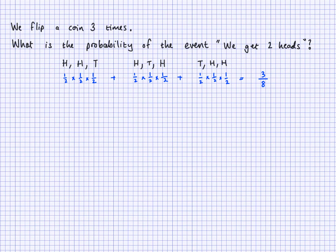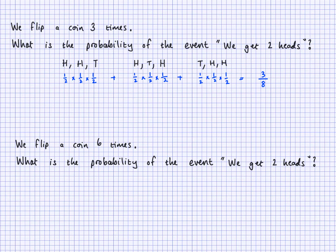There's a function that works out that number 15. The binomial distribution uses that function and gives you all the probabilities for such scenarios. So let's look at the same example with six flips. To get two heads when throwing the coin six times means getting heads twice and tails four times, and there are 15 different ways to arrange that.